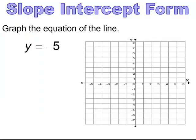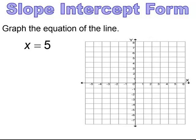Pause and try. The slope here is zero, so we're going to have a horizontal line at negative 5. Pause and try. The slope here is undefined, so we're going to have a vertical line where x is 5.